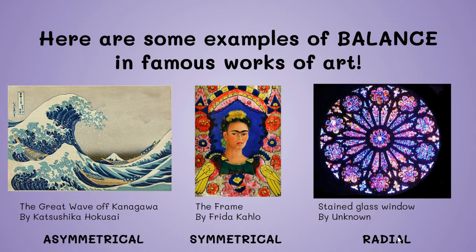Here are some examples of balance in famous works of art. As you can see in the Great Wave, the image has asymmetrical balance — there are larger waves on one side and more blank gray sky on the other side. The Frida Kahlo portrait has symmetrical balance, where if you draw a line down the middle with your eyes, you can see both sides are the same.